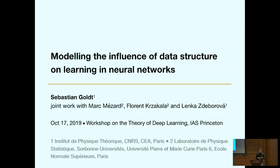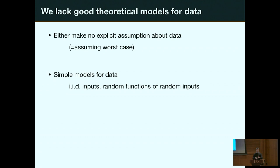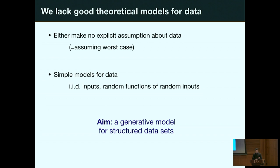What's even worse is we don't even have good theoretical models for data. There are two things we can usually do: we can make no explicit assumptions about the data distribution — effectively assuming data comes from some worst-case distribution — or we can assume the target function is a random function of some random IID inputs. Both approaches are blind to any type of structure that we see in real-life data.